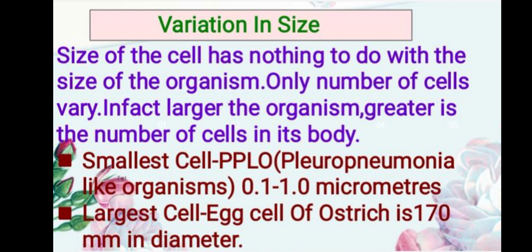Variation in size: always remember that the size of a cell has nothing to do with the size of the organism — it is the number of cells that varies. The larger the organism, the greater the number of cells. The smallest cell known so far is Mycoplasma (PPLO — Pleural Pneumonia-Like Organisms), which can be 0.1 to 1 micrometers. The largest cell known is the egg cell of the ostrich, which is 170 mm in diameter.